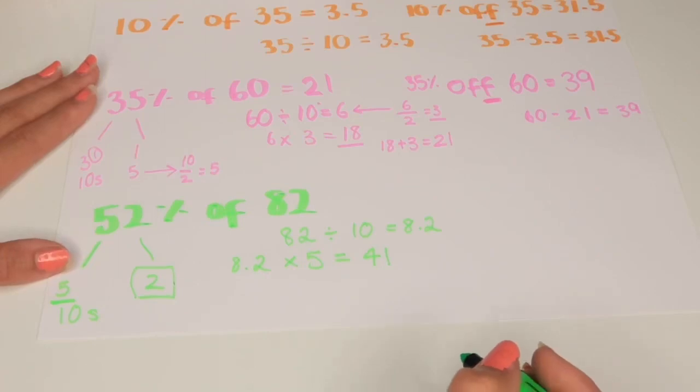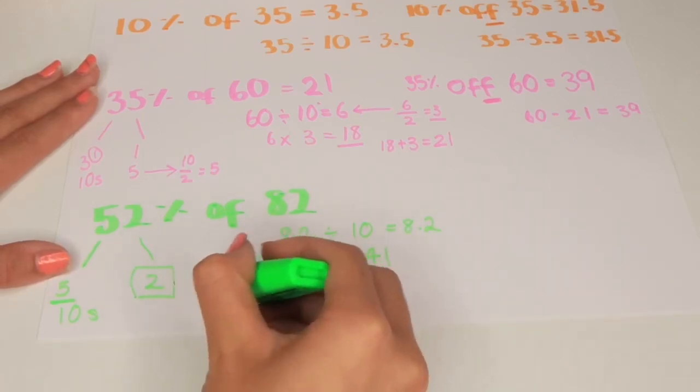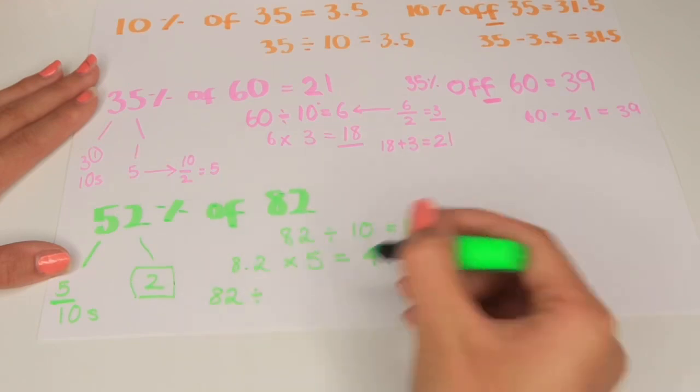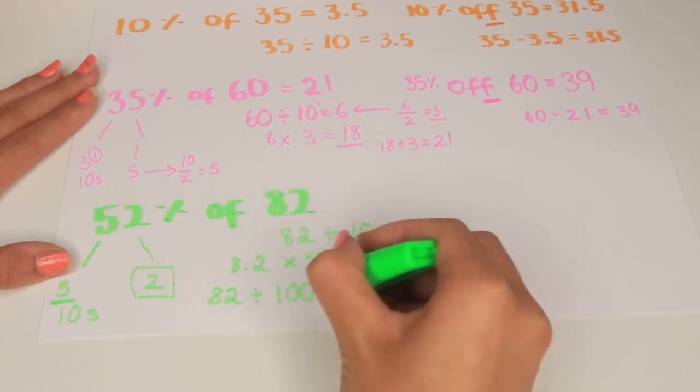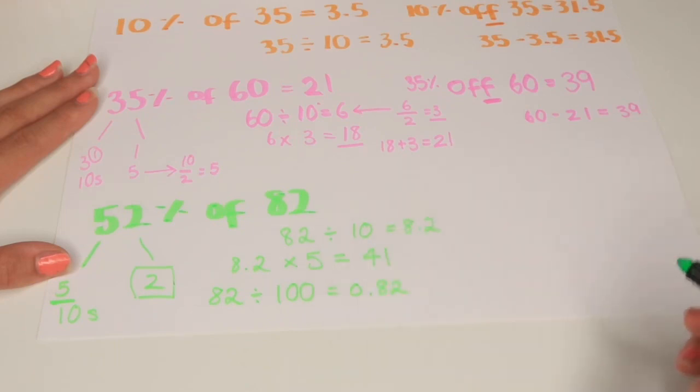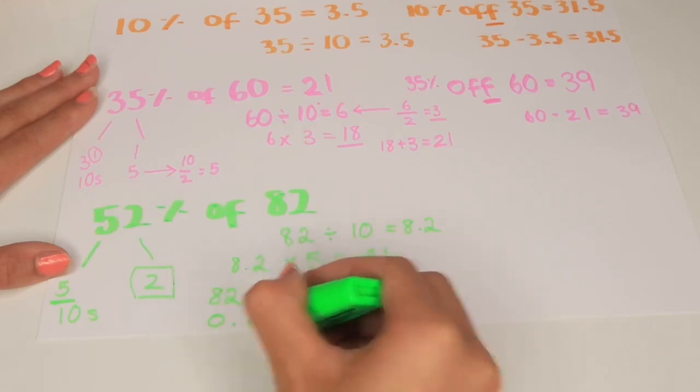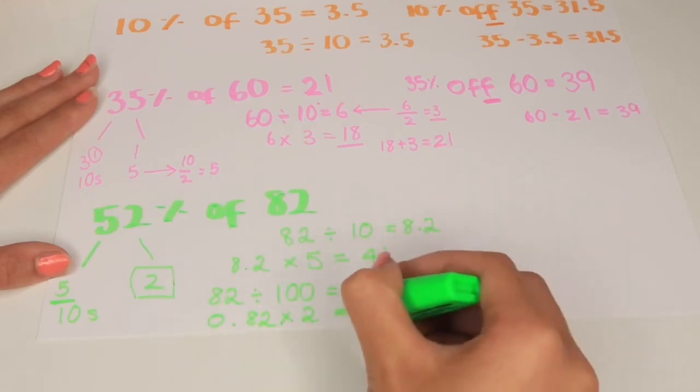We now need to find the 2% that we still haven't found yet. We do this by finding out the first 1%. So we do 82 divided by 100 which is 0.82. That is only 1%. We times that by 2 which gets us 1.64.